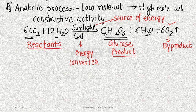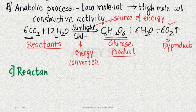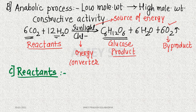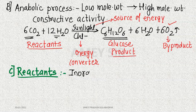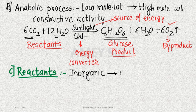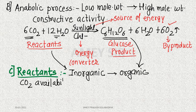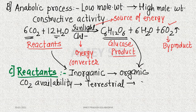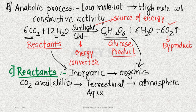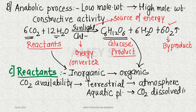Regarding the nature of reactants: carbon dioxide and water are the reactants, and they are inorganic compounds. Their conversion occurs into glucose, which is organic in nature — so reactants are inorganic and the main product is organic. Regarding CO₂ availability: for terrestrial plants the source is the atmosphere, while for aquatic plants the source is CO₂ dissolved in water, which is the most important source from the photosynthesis point of view.